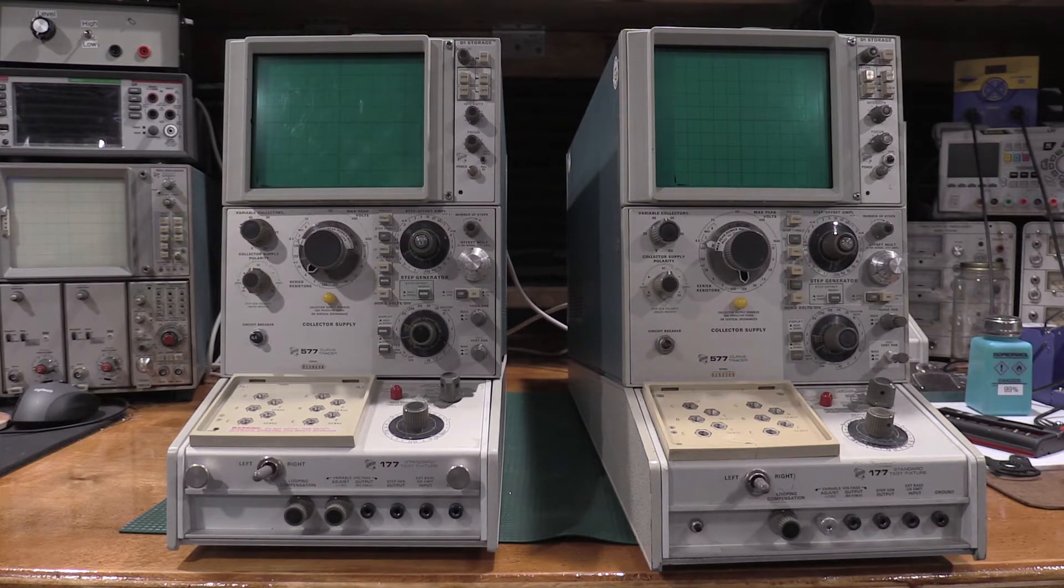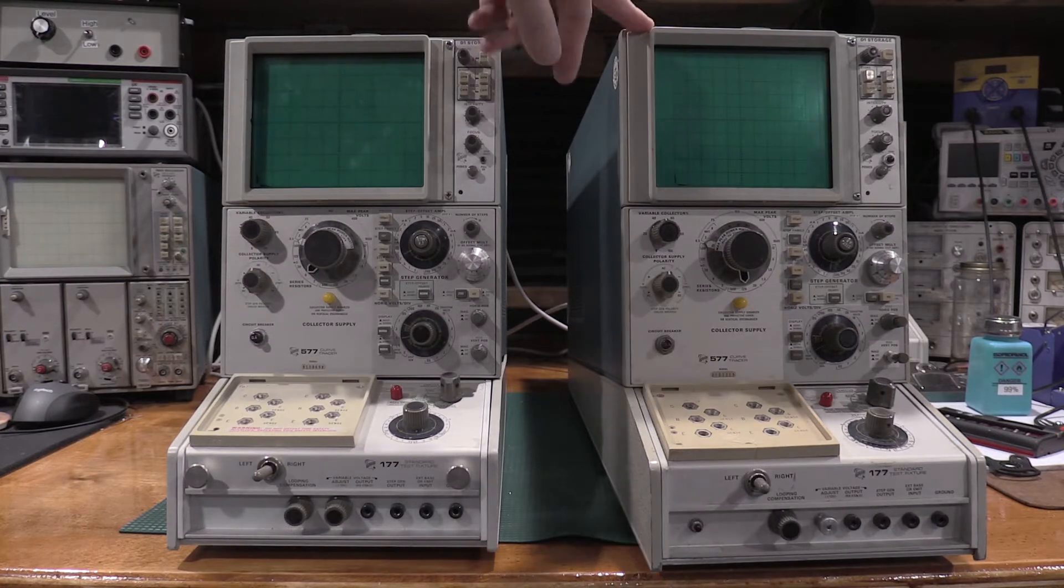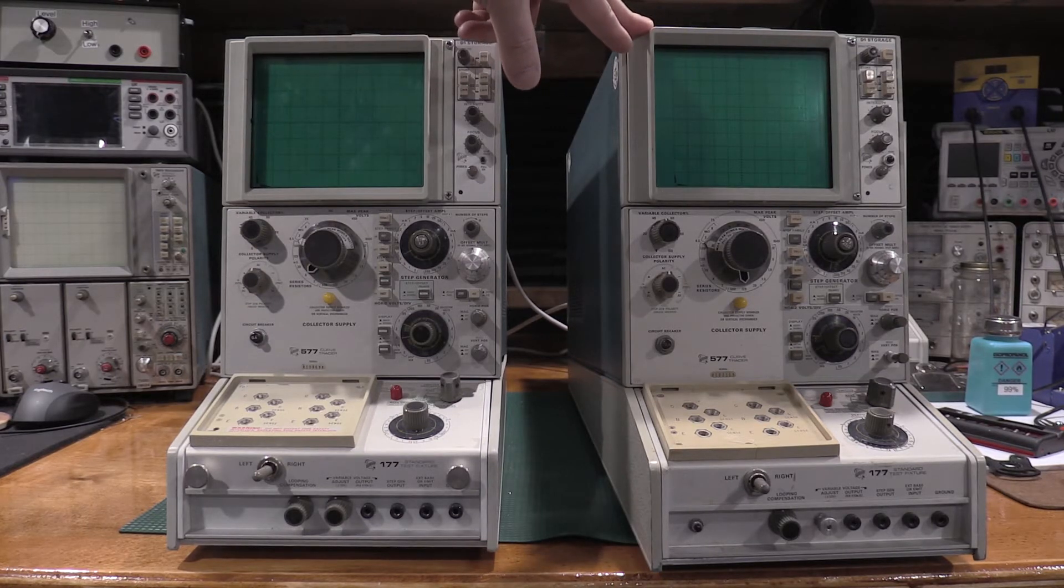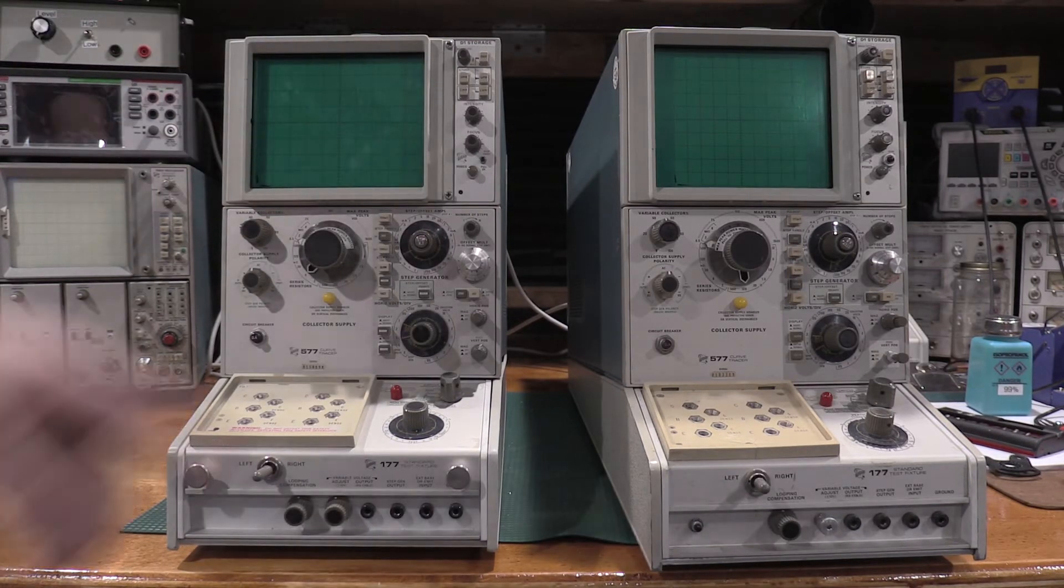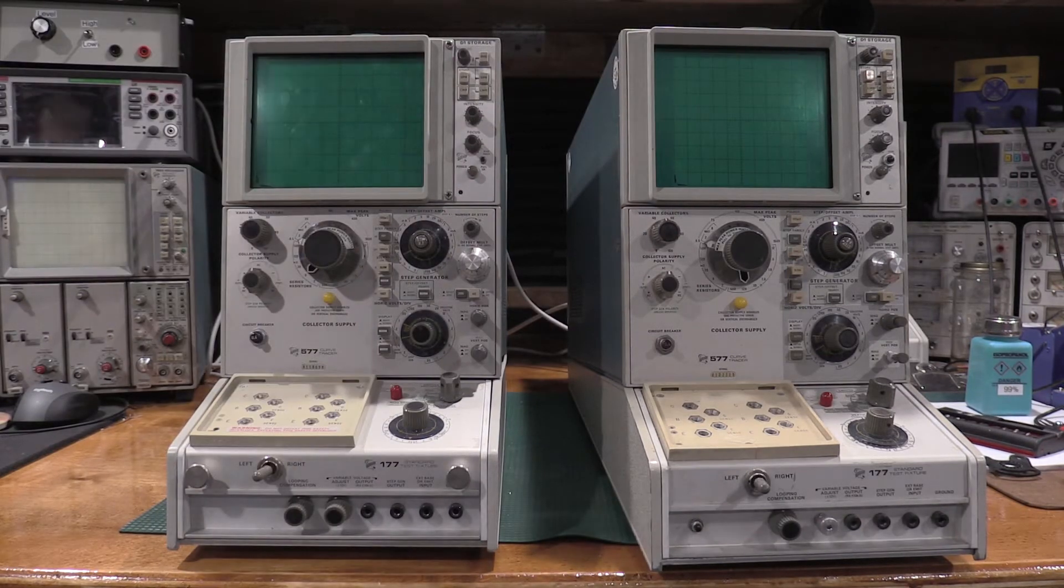These are 577s, but they are the D1s. They do have the storage tube function. This has the more rare Graticule, this has the standard Graticule. The squares are bigger and it doesn't have the uncalibrated edges.